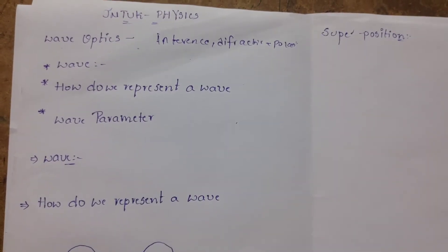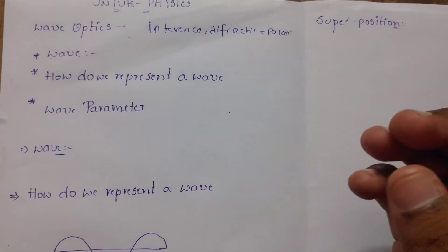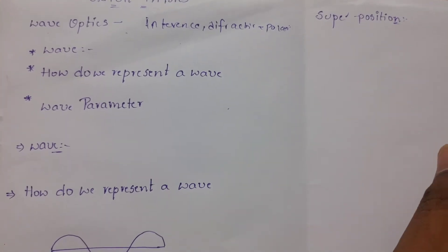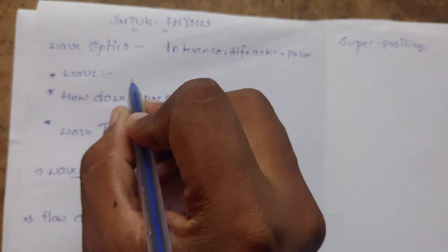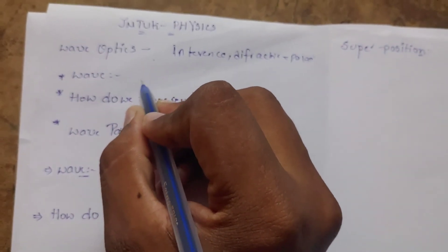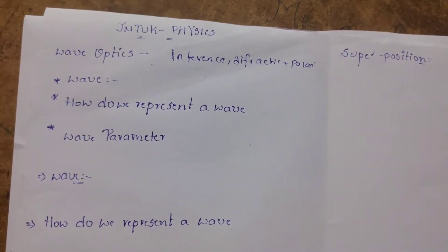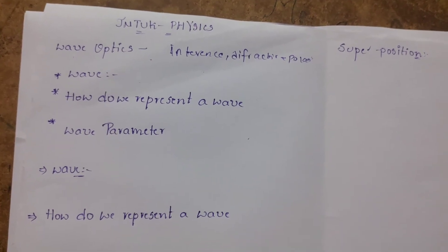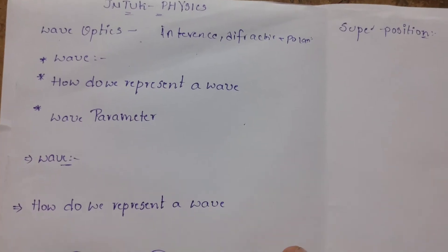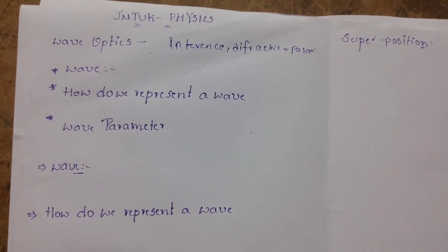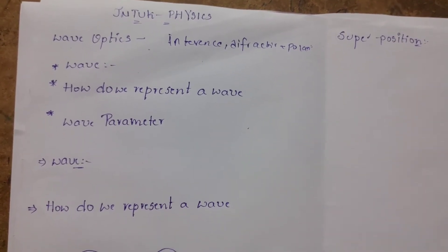A wave is a periodic disturbance in the medium. There is nothing but a periodic disturbance created in the medium. There are different types of wave representations.